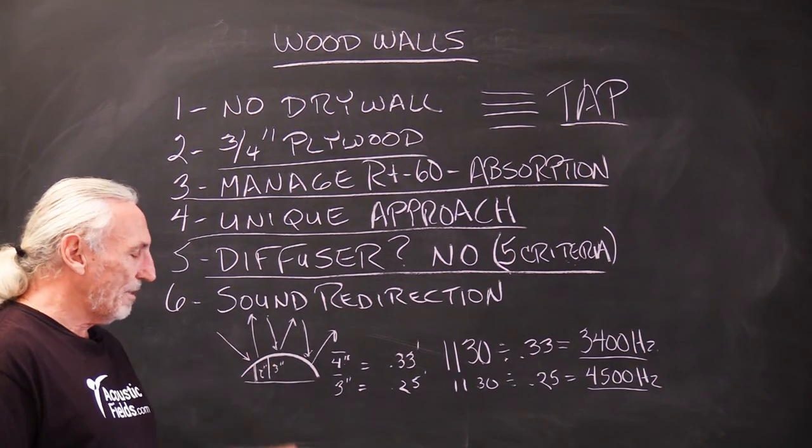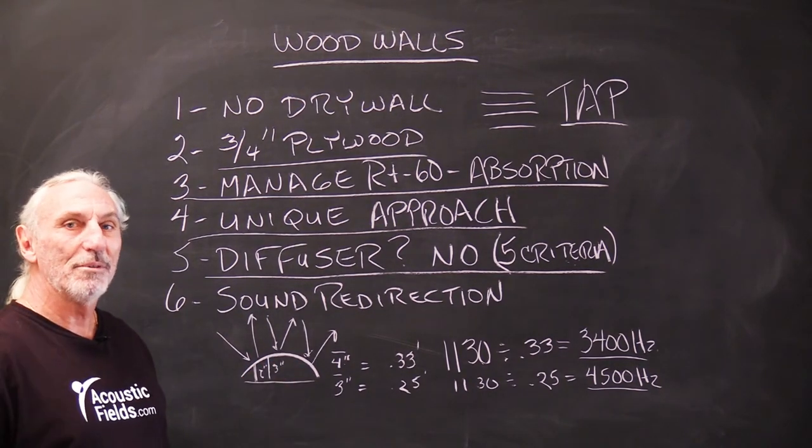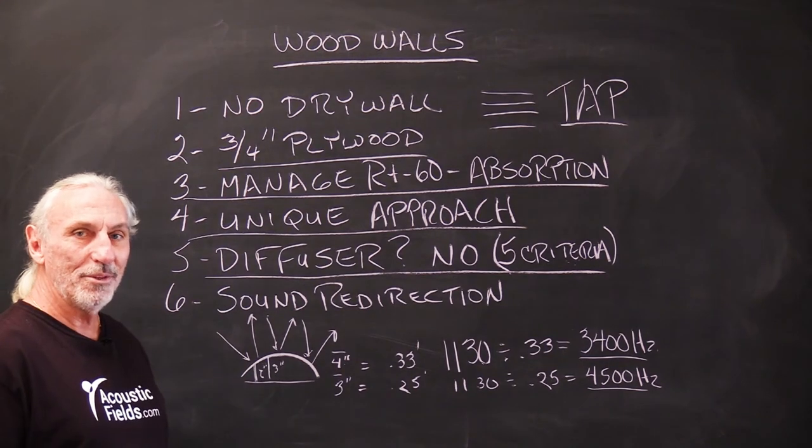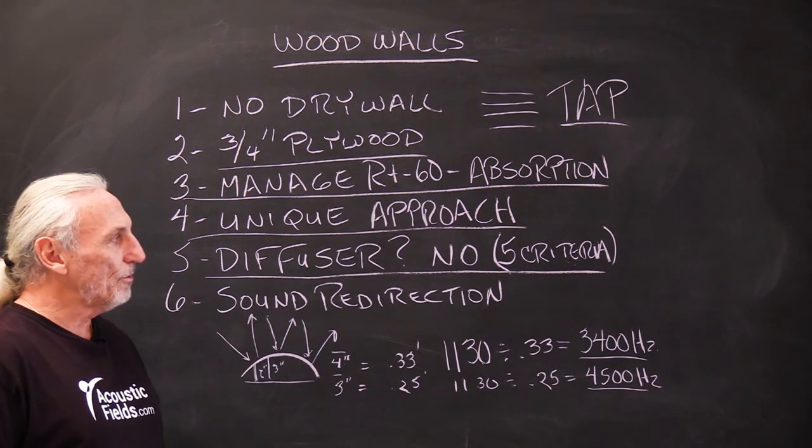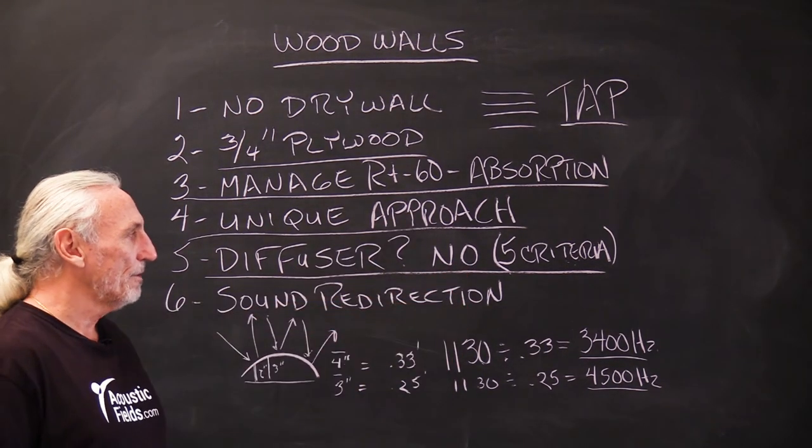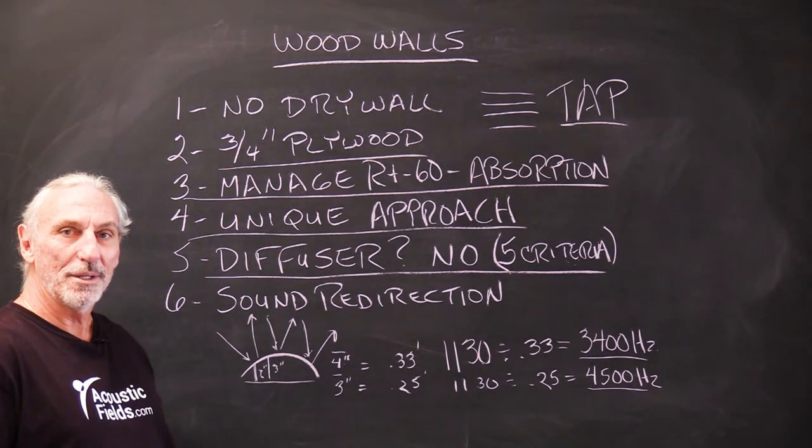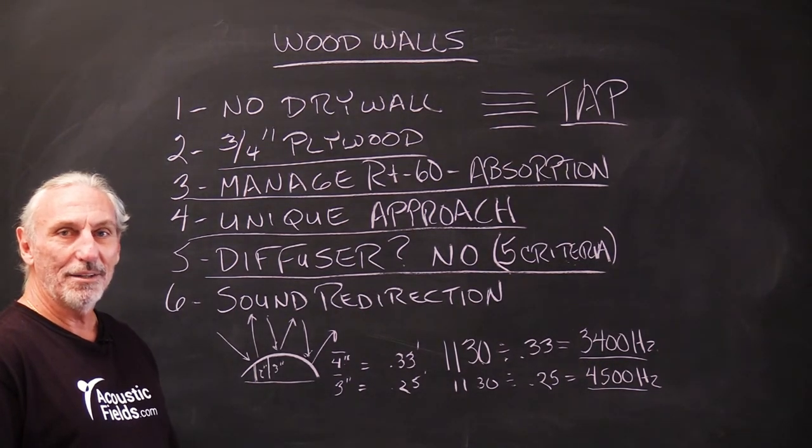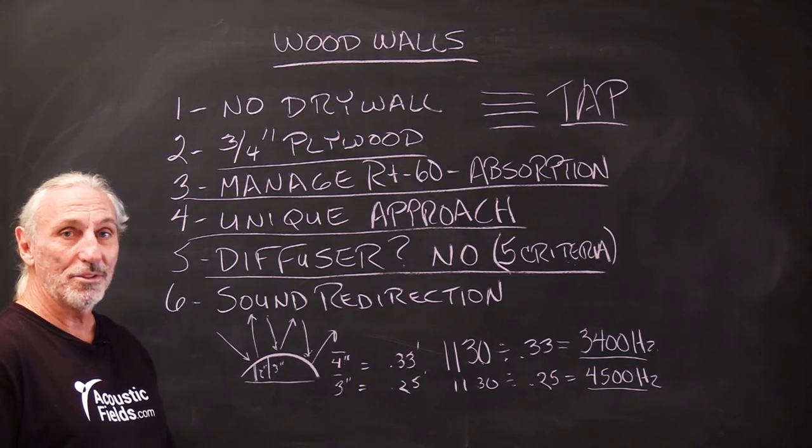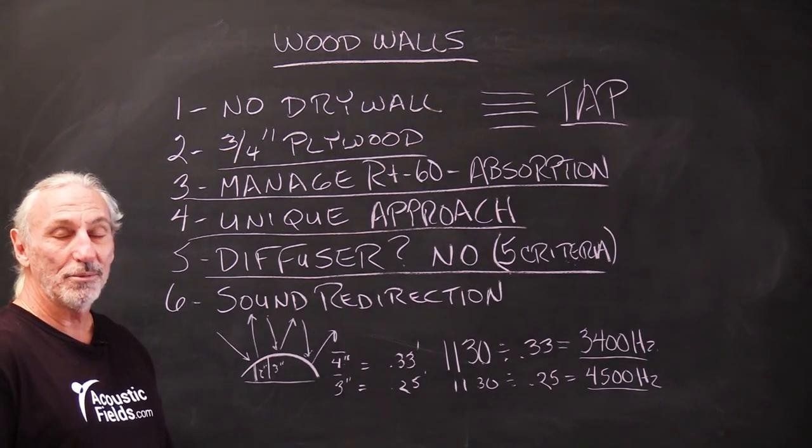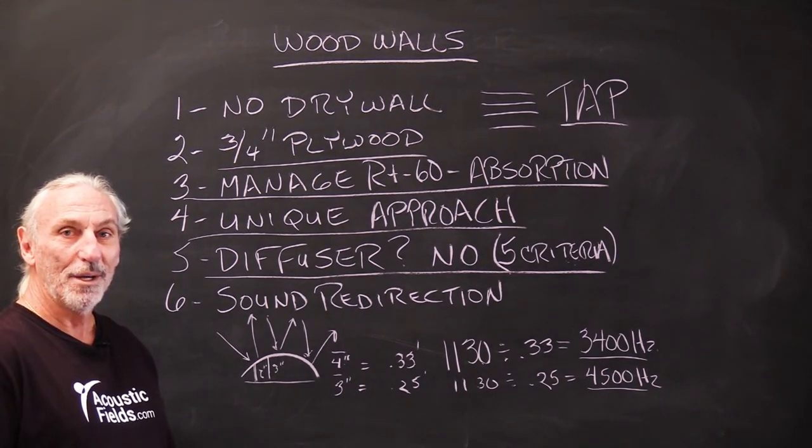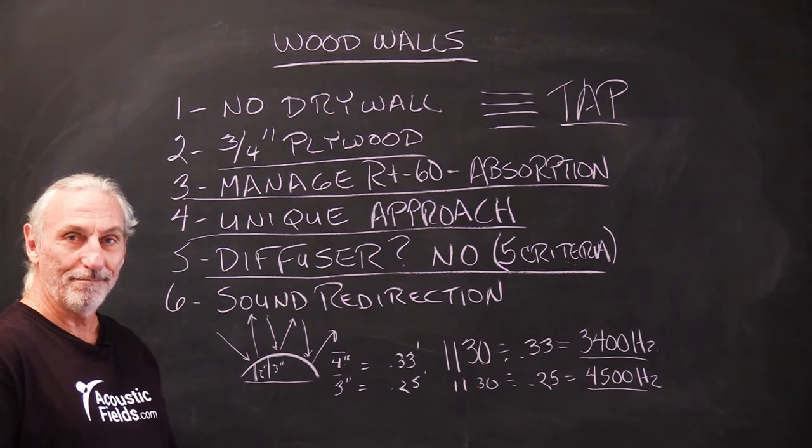So, these devices, you know, a lot of companies, they have these hemispherical devices and they call them diffusers. You have to be very careful. Just remember diffusers must satisfy five really rigid criteria. So, I thought this was a fun idea that the client did and he still uses it today and this is an income producing room. So, he makes a living in this room. So, wood walls, kind of fun. Thank you.